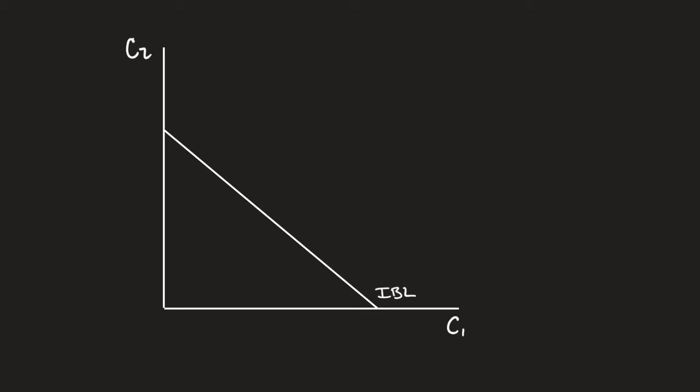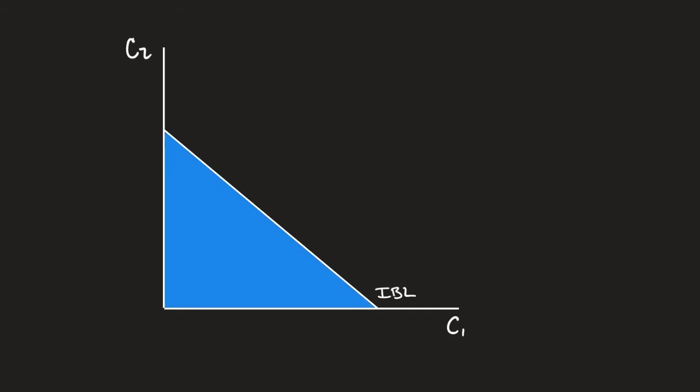Let's talk about some shifting of the IBL, and then we will talk about what happens if we rotate the intertemporal budget line. So I'm going to fill in this triangle right here.